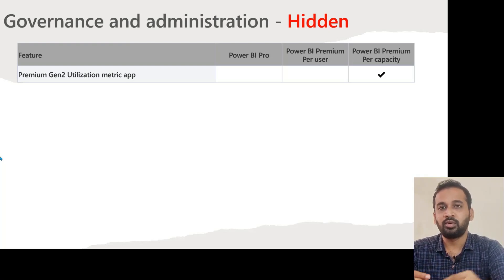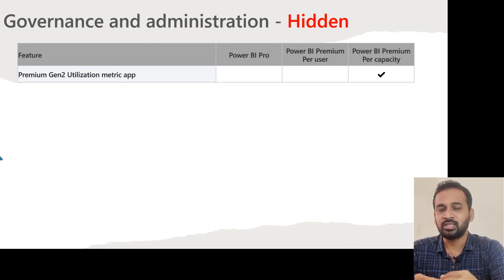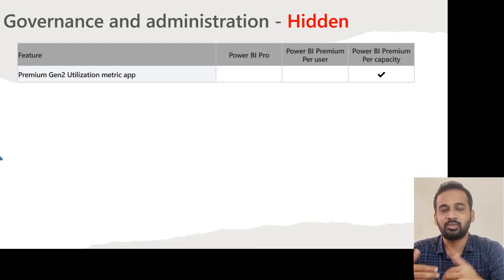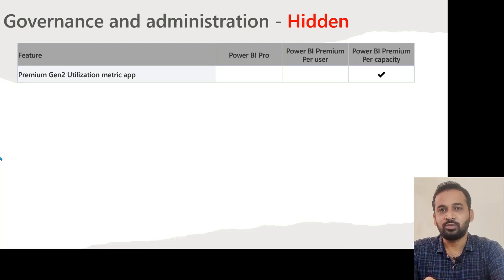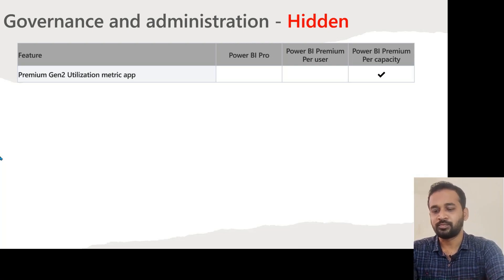Report-level usage metrics are available for all users — Pro, Premium Per User, and Premium Per Capacity. If you want to build your own adoption metrics, you need to use the Power BI REST API to download the activity log from the Power BI service and then build a report on top of that. If you consume directly from the activity log, only 30 days of data are available by default. It is recommended to download the data using a PowerShell script and then build your report on top of it.